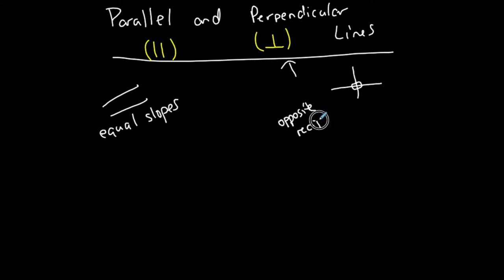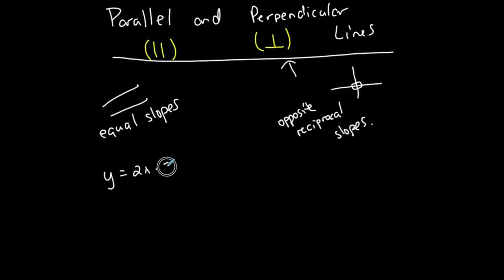For example, y equals 2x minus 3 and y equals 2x plus 4 — these are not the same lines, they have different y-intercepts, but they have the same slope. So they increase at the same rate of change and therefore they are parallel lines.